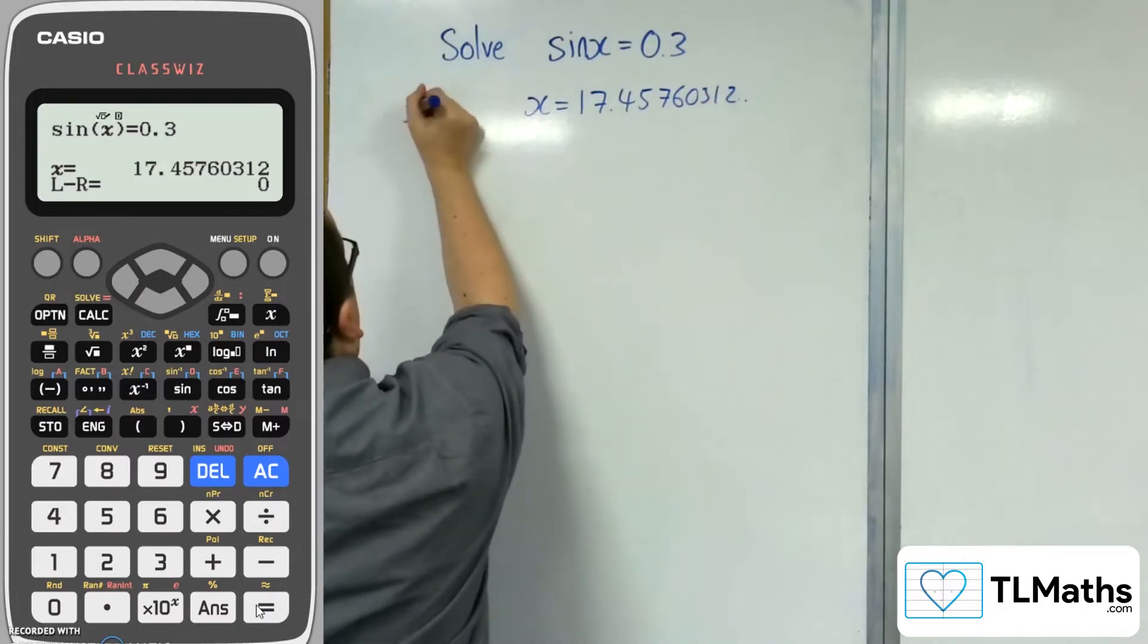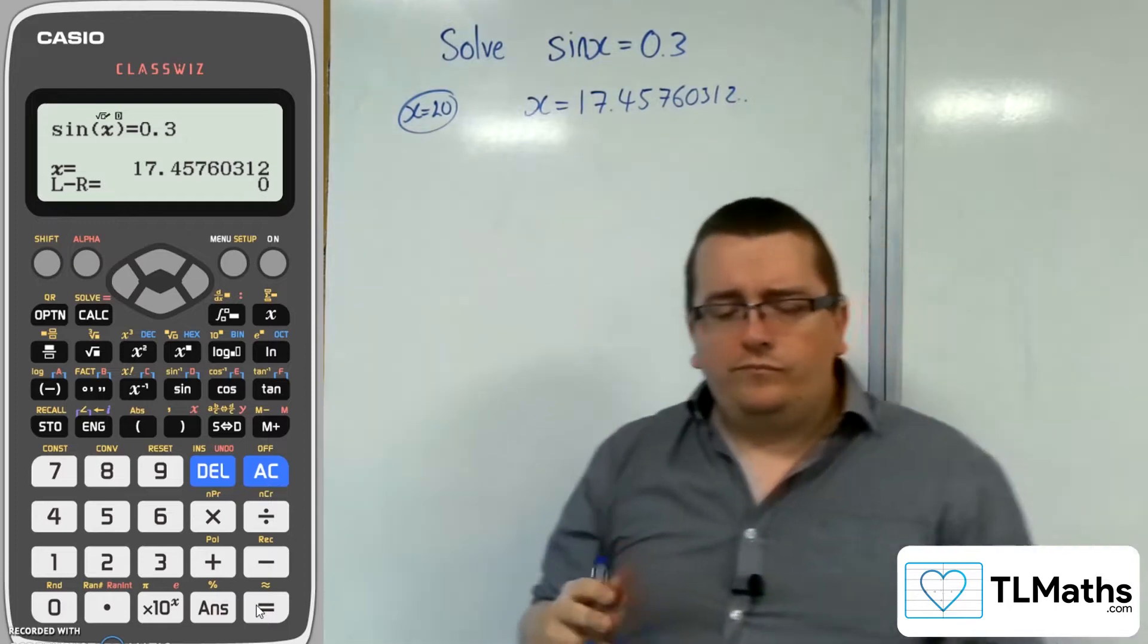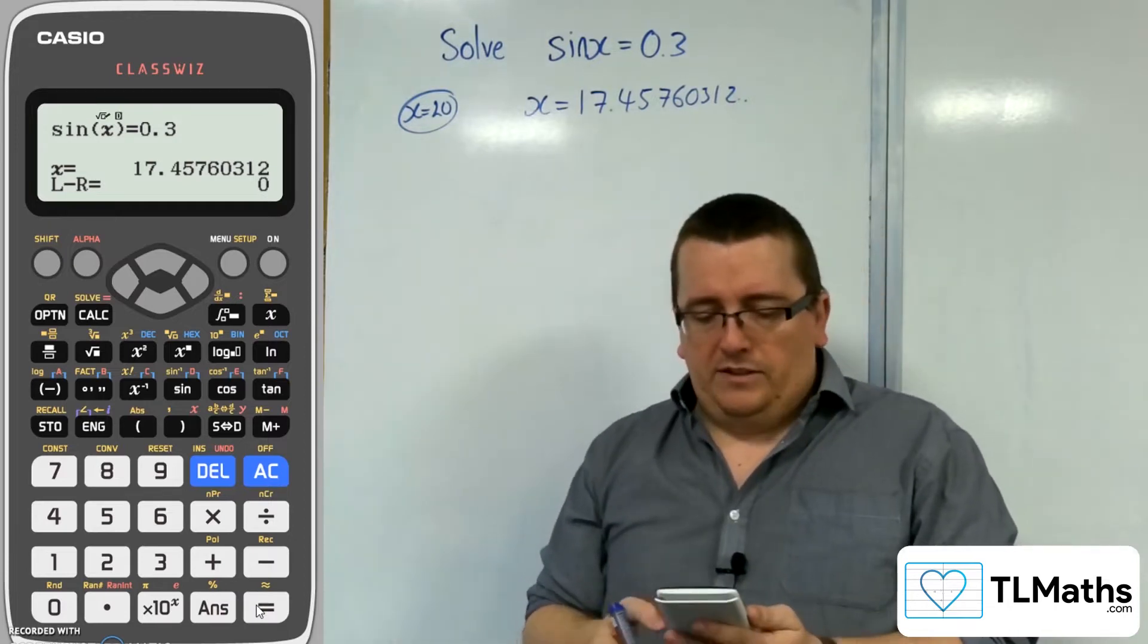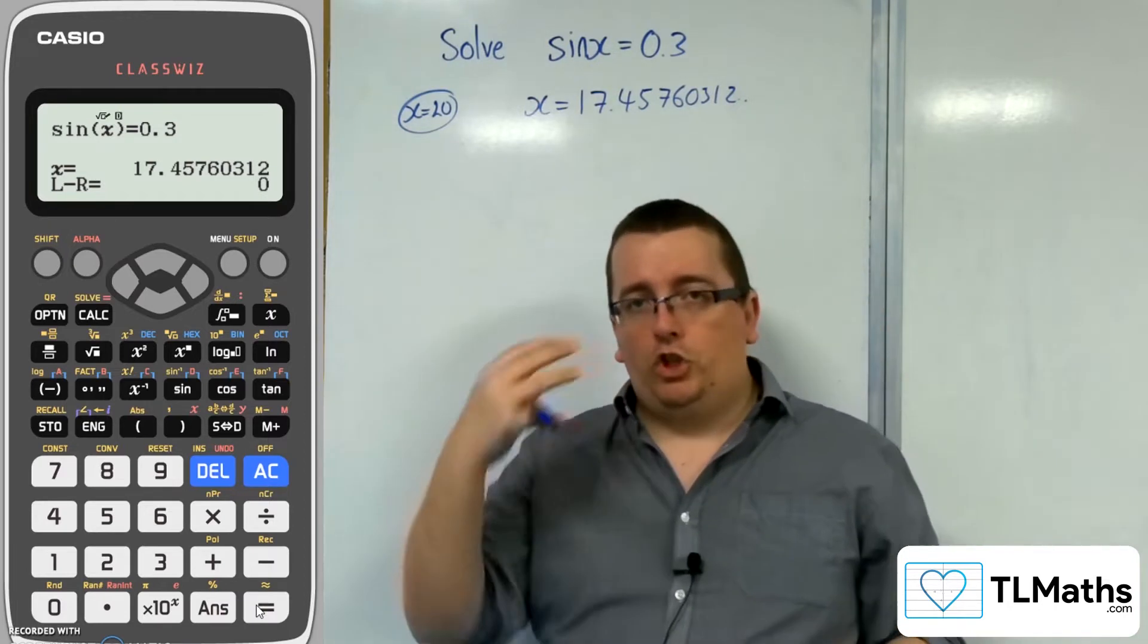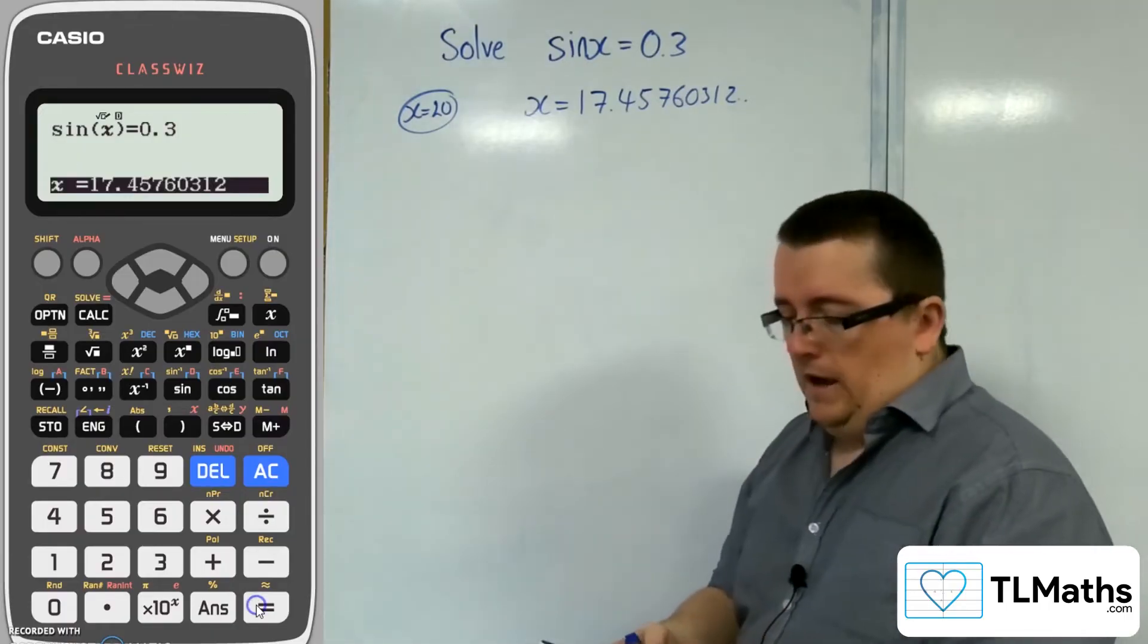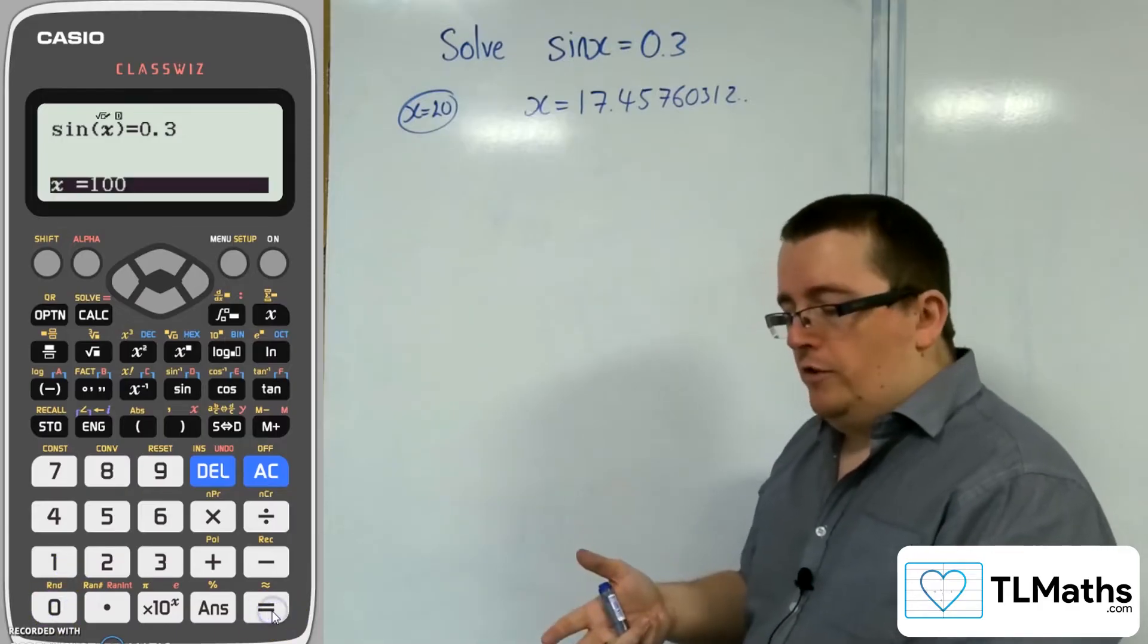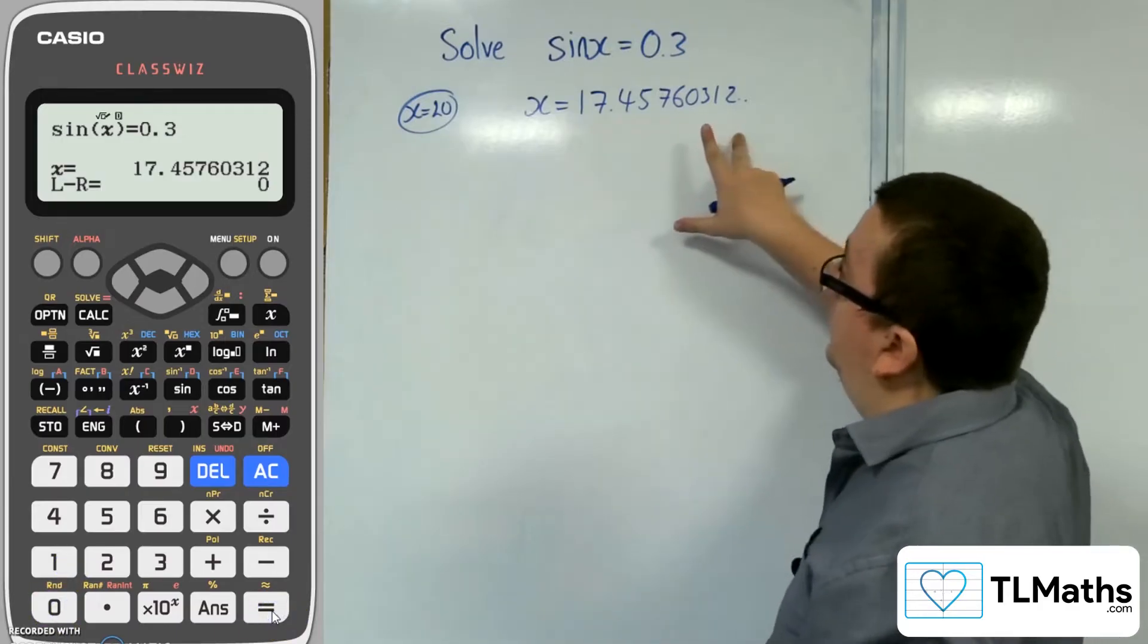So I get x = 17.45760312. That's when I've got this starting value of 20. So let's instead, I'll press equals again, and now I can change my starting value. Let's try 100. When I try 100, I get exactly the same answer. So even from x equals 100 degrees, it is homing in on this solution.